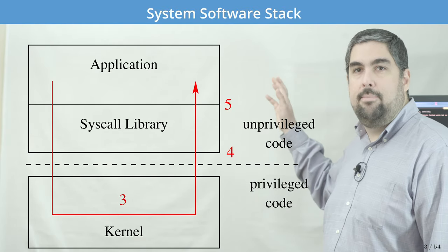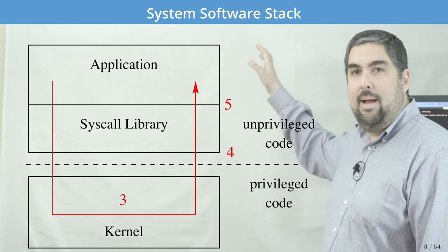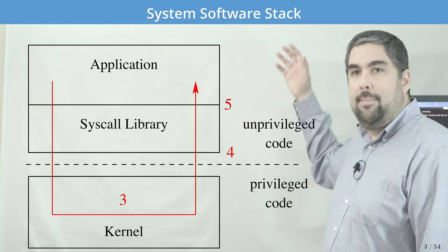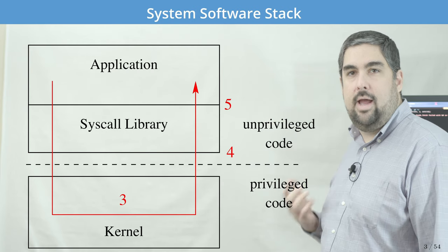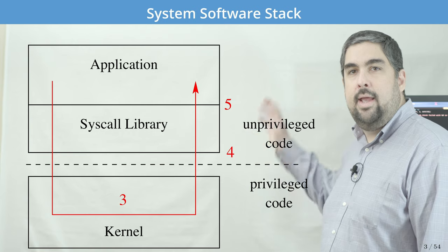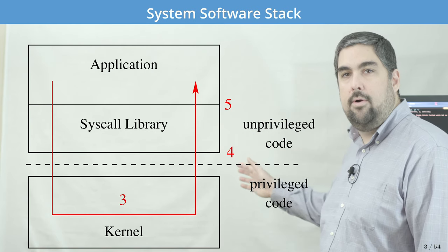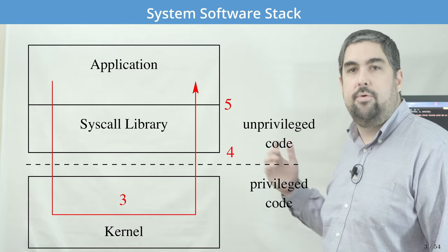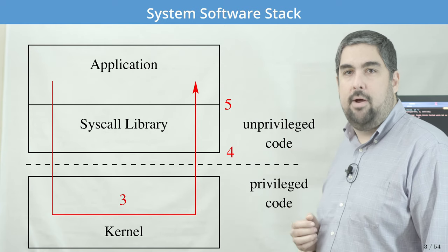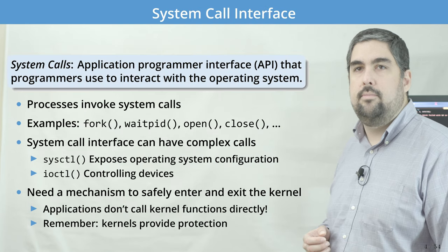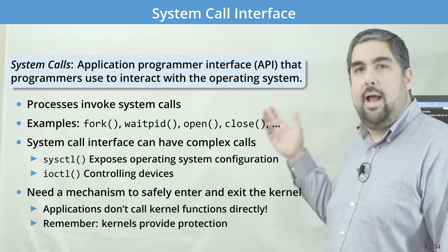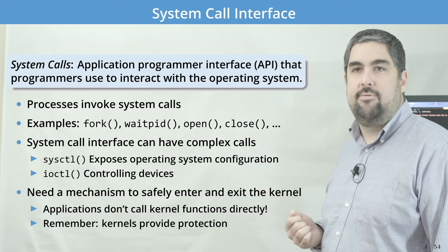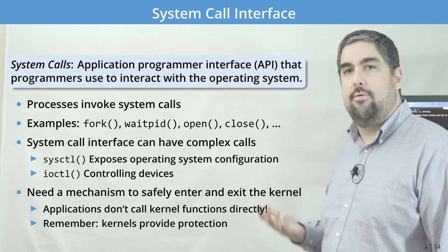Here we have an example coarse-grained diagram of an application or a single process running, and the way it communicates is through this system call interface. The application calls a function that's typically inside of a library — libc in many operating systems — and that library then implements the system call. The kernel gains control of the processor, is able to execute on behalf of the application the requested call, and then returns the response back to the application. System calls broadly speaking are the application programmer interface, or API, that allows a programmer to interact with the raw operating system.